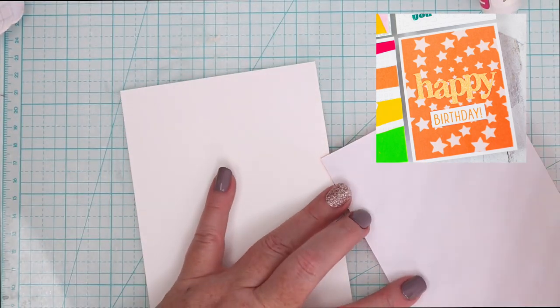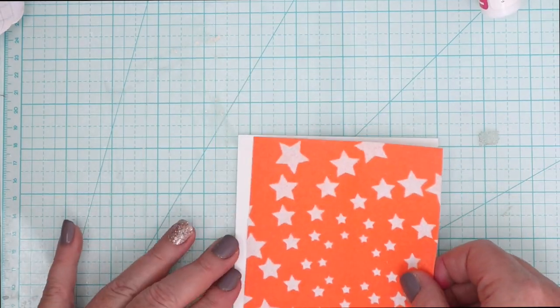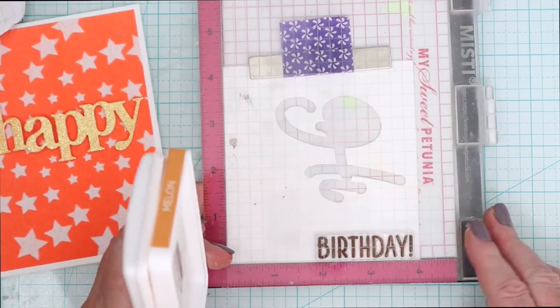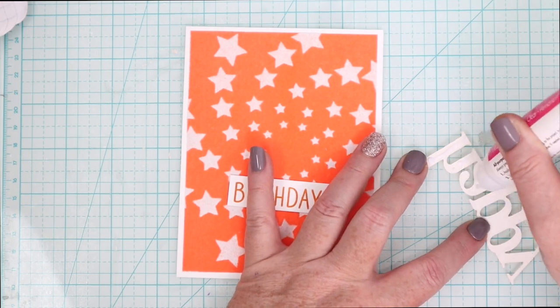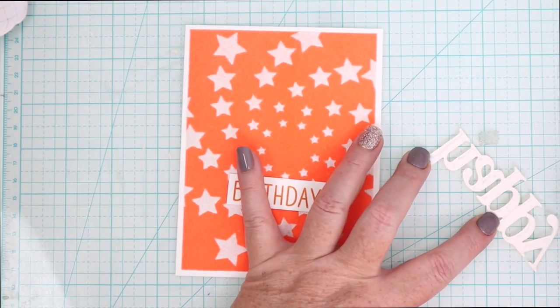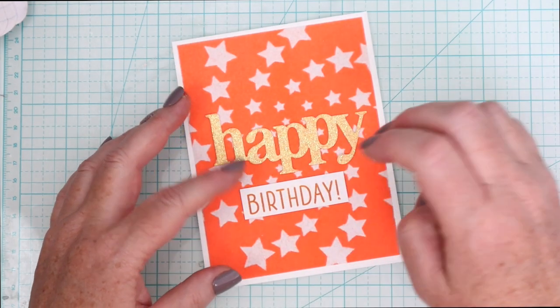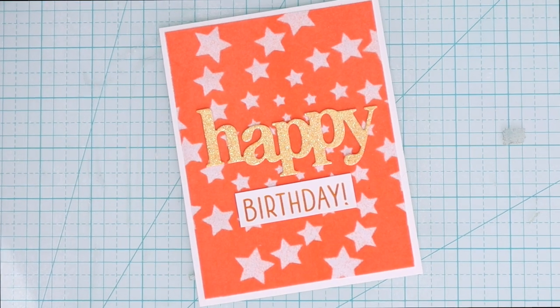You'll remember that the gel was the one where we got two backgrounds for one. This is the negative background where I peeled the flock off. I'm going to use that with Hero Arts Happy Thanks die and stamp set so I've cut the happy out of glitter cardstock and I'm going to use liquid glue to adhere that down and then liquid glue to adhere the birthday stamped sub sentiment down as well. If you have Thermoweb's flock transfer sheets in your stash I hope this video inspired you to pull them out and try some of these techniques.